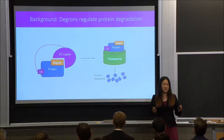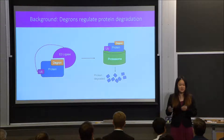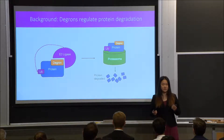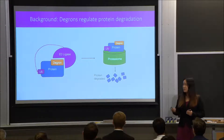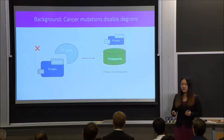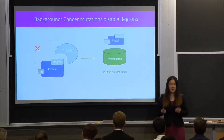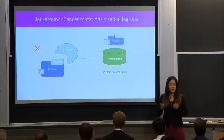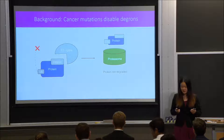Degrons are short amino acid sequences located on a larger protein that regulate the protein degradation process, and they are crucial to maintaining homeostasis. However, cancer can mutate degrons, causing a loss of function. A disabled degron is unable to be recognized by the E3 ligase, preventing the domino chain reaction from happening, resulting in a lack of protein degradation.